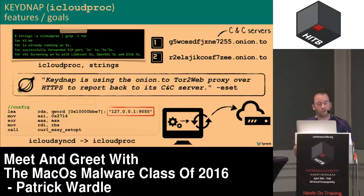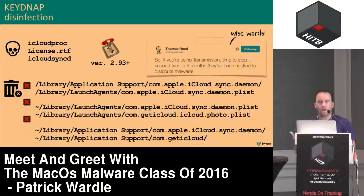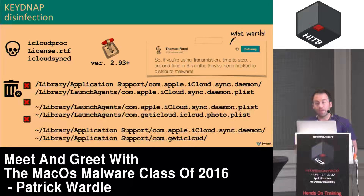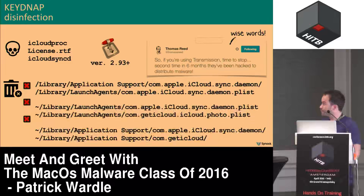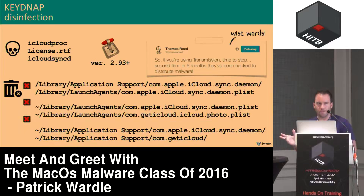The main backdoor component connects to the Tor2Web component and communicates out via Tor — that's the malware's command and control mechanism. To remove Keynap from an infected system, you just unload the launch agents to kill those processes, then delete both the binaries and the two plist files. And a word of advice from Thomas Reed: this is the second time the Transmission application has been hacked and trojanized, so maybe stop using it unless you're looking for new malware.